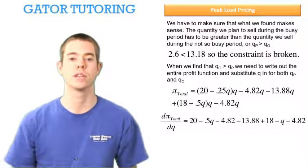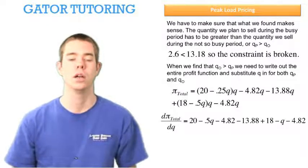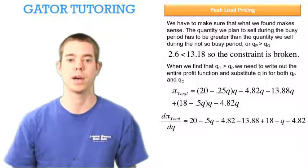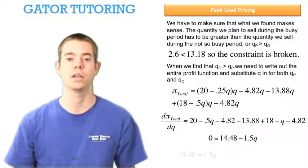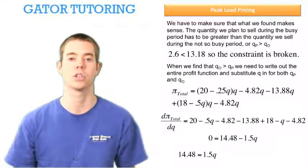We take the derivative with respect to Q and set that derivative equal to zero to maximize profits. Combining like terms, we find that our optimal quantity, when these two things are averaged, is 9.65 units.